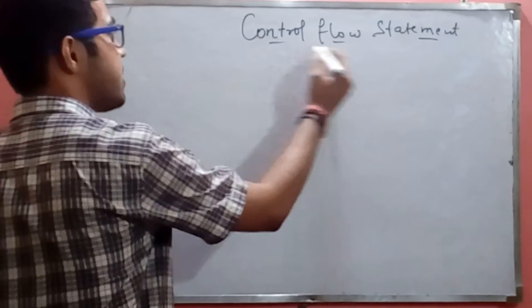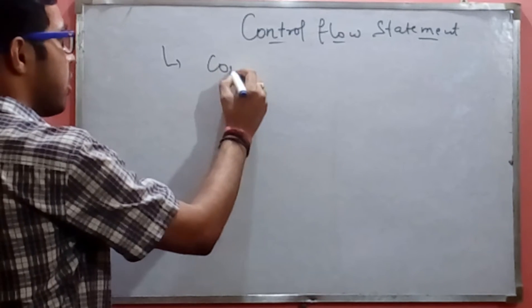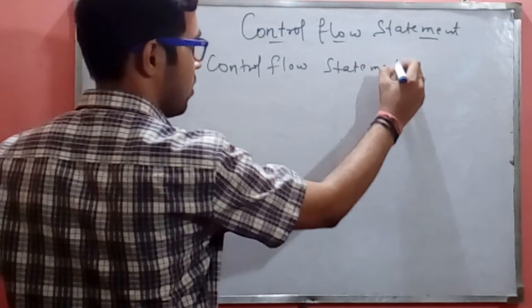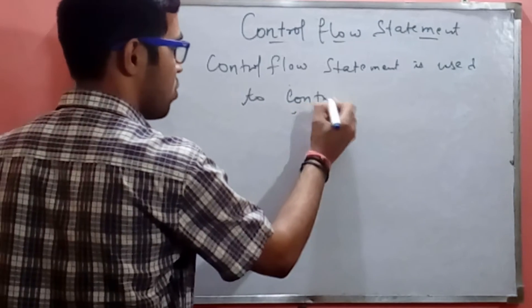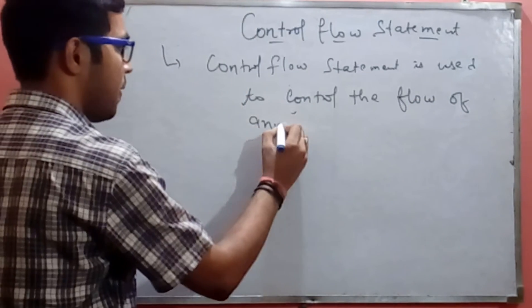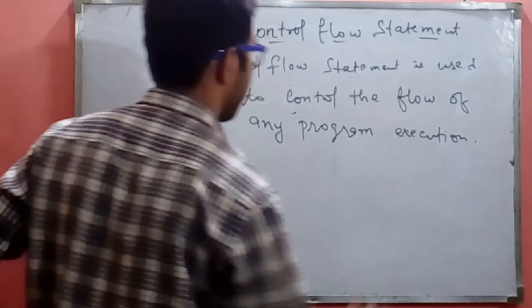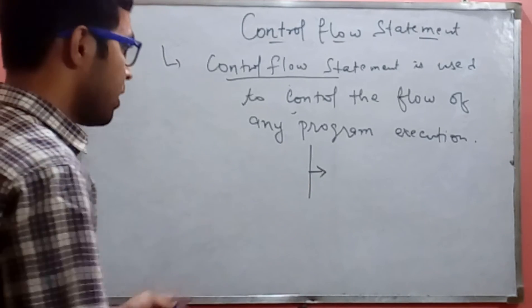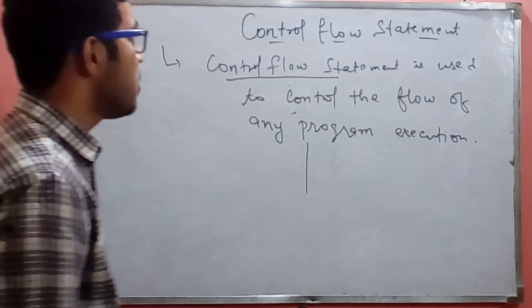Hello friends, today I will teach you control flow statement in C programming language. Control flow statement is used to control the flow of any program execution. If you want to control your program execution, you will definitely use control flow statement.